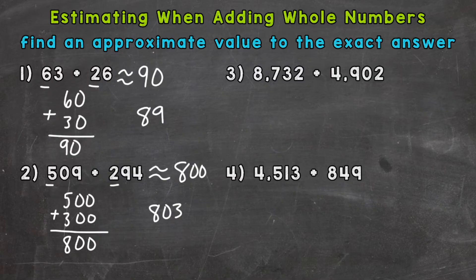Let's move on to number three where we have 8,732 plus 4,902. I'm going to show you a couple of strategies for this one. First front-end estimation. So here thousands place. 8,732 would round to 9,000.